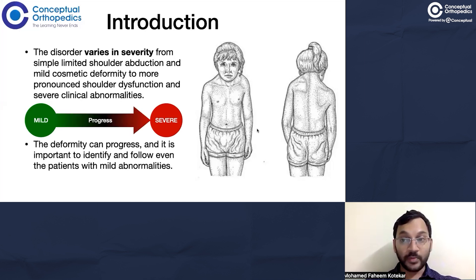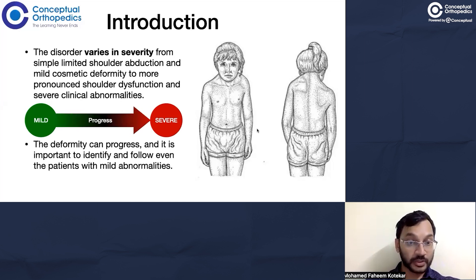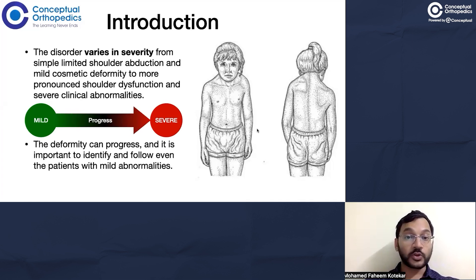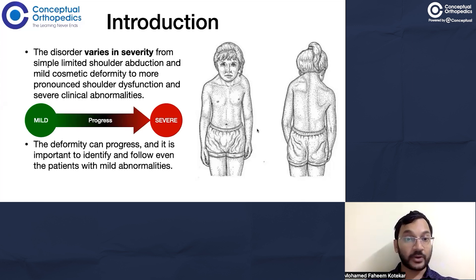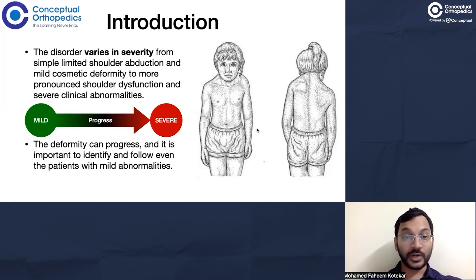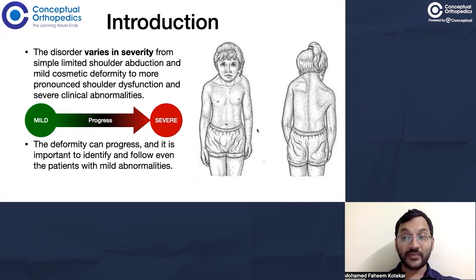This disorder can vary in severity. It could be a very mild problem which is only cosmetic, or it could be a severe problem which is both cosmetic and functional, with shoulder range of motion also being affected. This severity is progressive - as the child grows, the mild variant can progress to a moderate or severe variety.